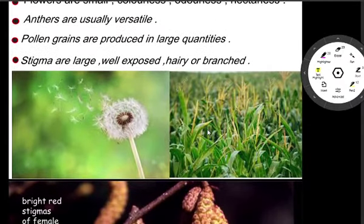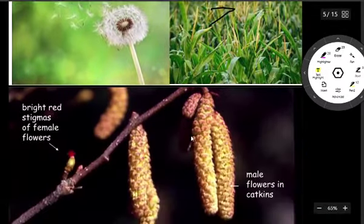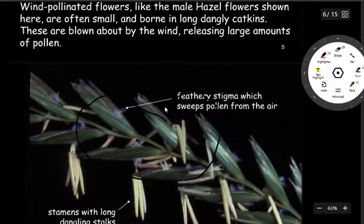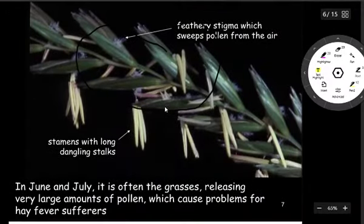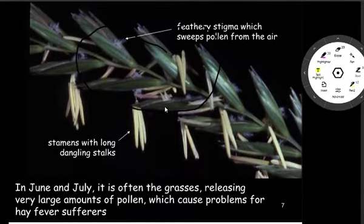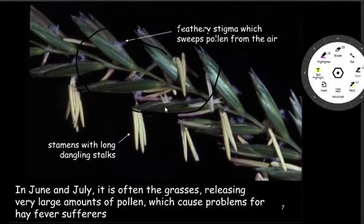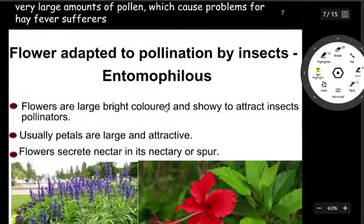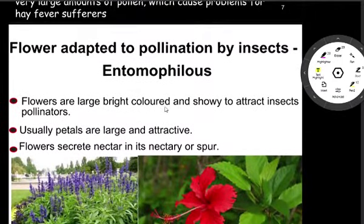Few examples are maize, hazel flower, and grass. In June and July, grass often releases very large amounts of pollen, which causes problems for hay fever sufferers.